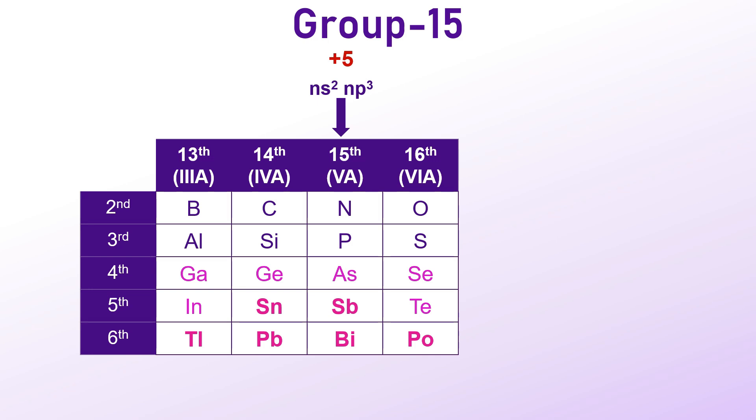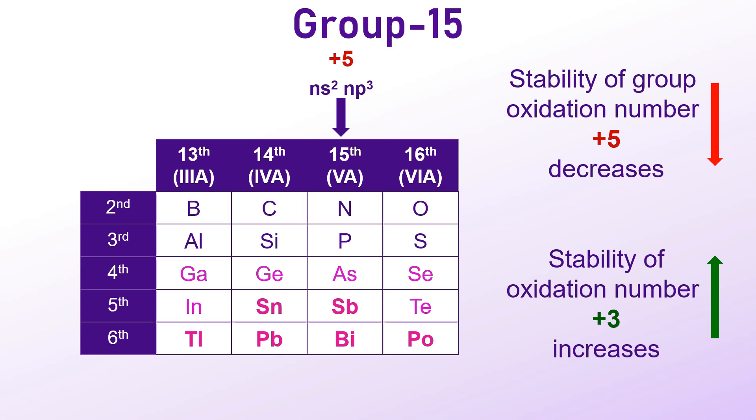A similar trend is observed in group 15, where the stability of +5 oxidation state decreases as we move down the group, while the +3 oxidation state becomes more stable. Heavier elements like arsenic, antimony and especially bismuth, primarily exhibit the +3 oxidation state.